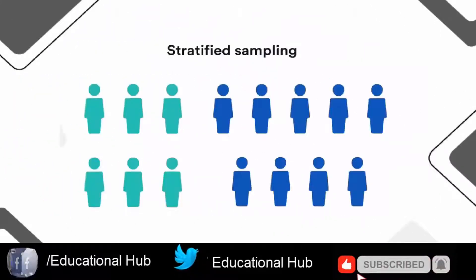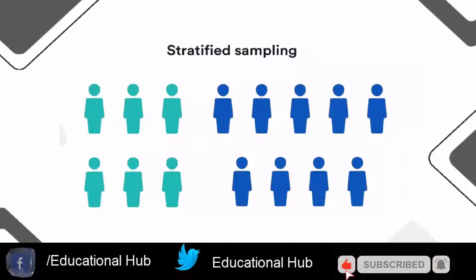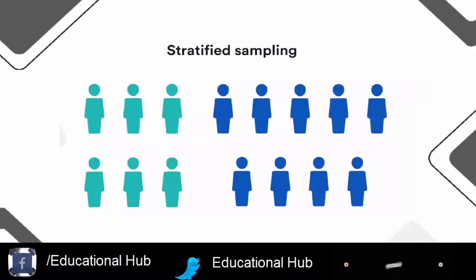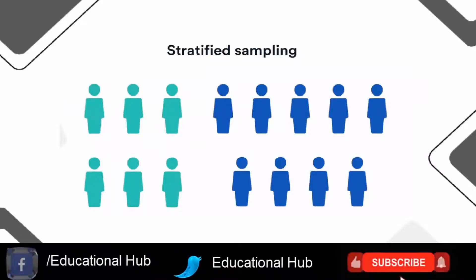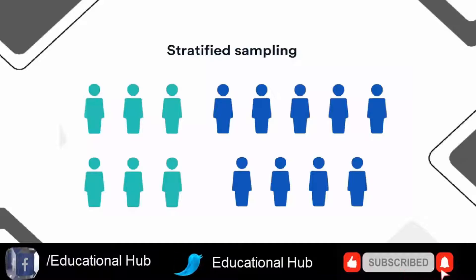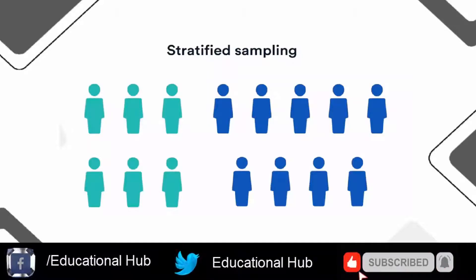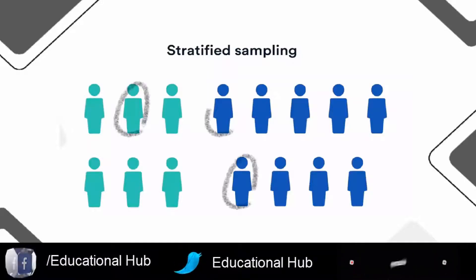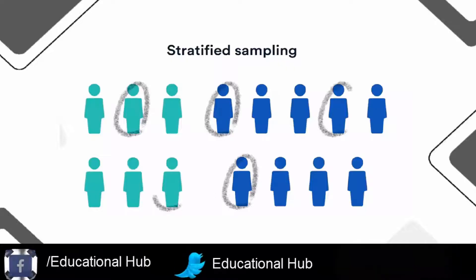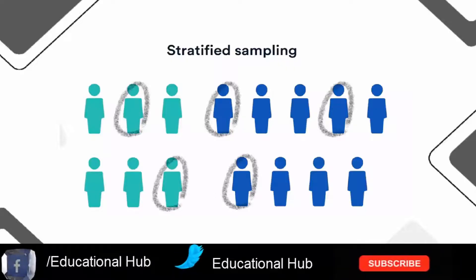3. Stratified sampling. Stratified sampling involves dividing the population into subpopulations that may differ in important ways. It allows you to draw more precise conclusions by ensuring that every subgroup is properly represented in the sample.